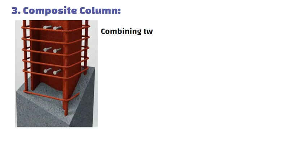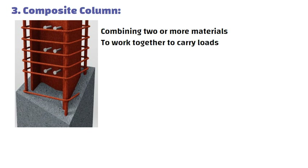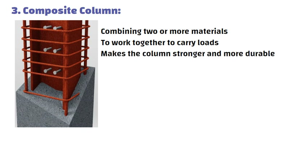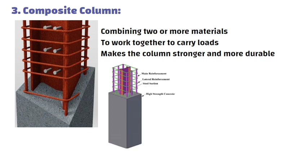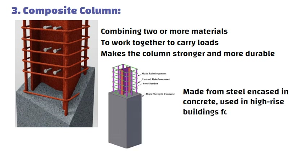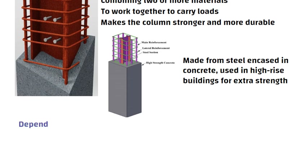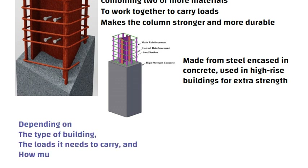3. Composite Column: A composite column is made by combining two or more materials, such as concrete and steel, to work together to carry loads. This combination makes the column stronger and more durable. Example: a column made from steel encased in concrete, used in high-rise buildings for extra strength. Each type of column is used depending on the type of building, the loads it needs to carry, and how much strength and durability are required.